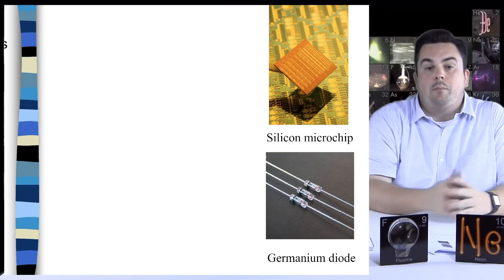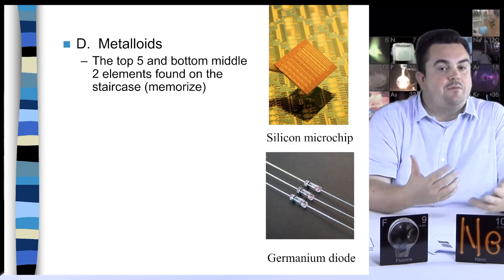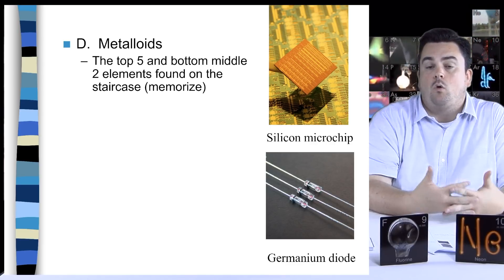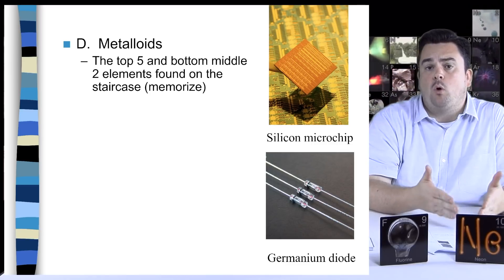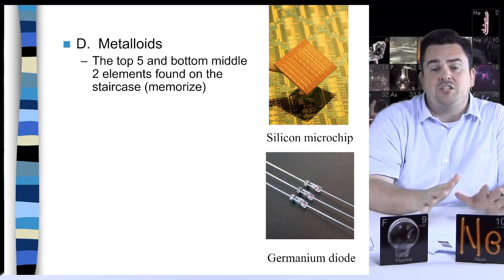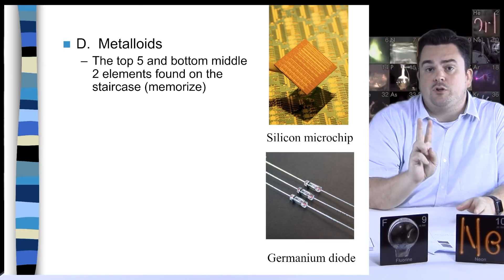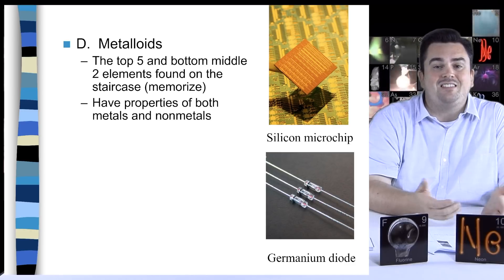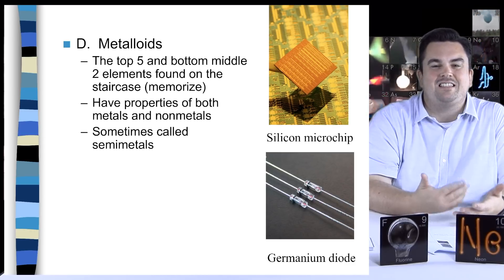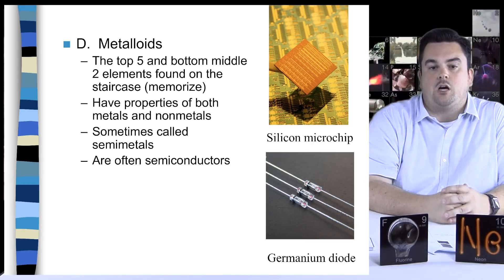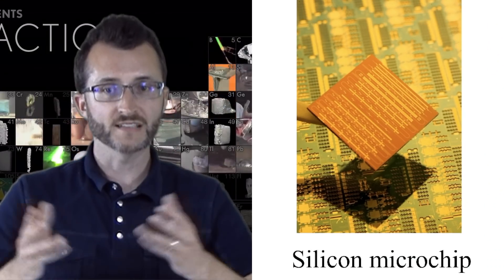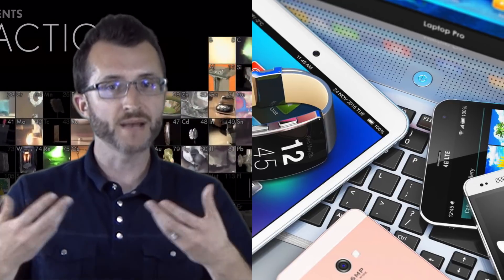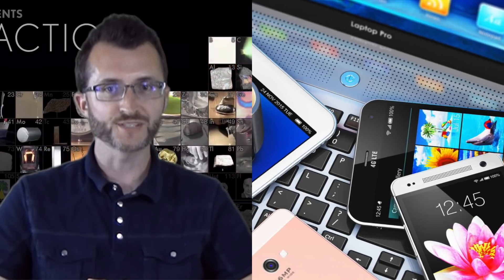The metalloids are the top five and bottom middle two elements found on the staircase. In other words, it's all the elements that have a bold line border for their box that are touching that staircase, except for two. That would be aluminum and polonium. They have properties of both metals and non-metals. They're sometimes called semi-metals, are often semiconductors. For example, silicon is used in microchips and germanium is used in diodes, both of which are used in many of the modern electronic devices that you use every day.